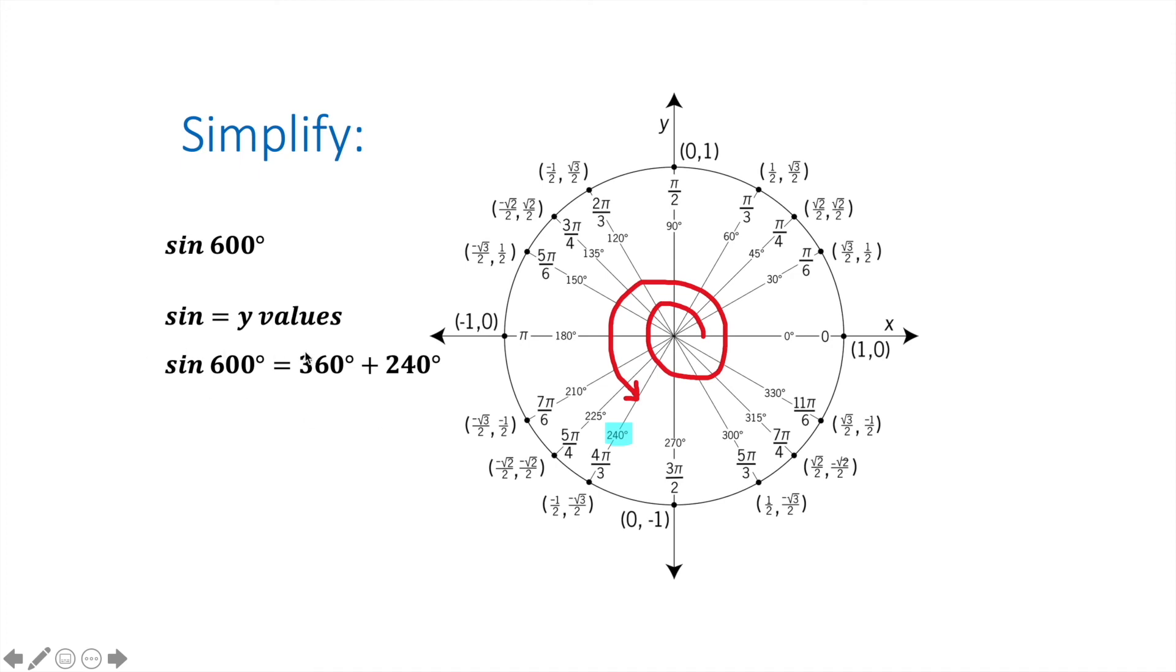So remember, sine are all of my y values, so I simplify this one to simply be negative square root of 3 over 2.